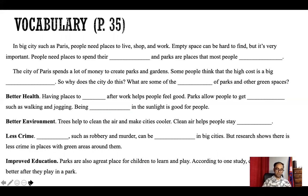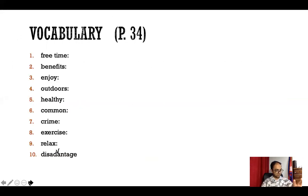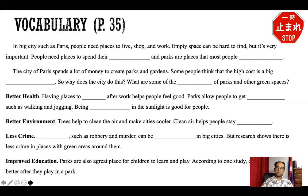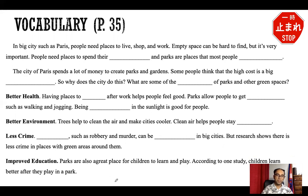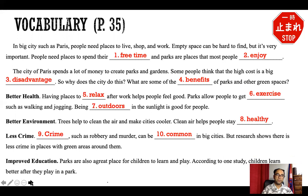Let's go to the next activity. You have to use the words given in exercise B to fill in the blanks. Stop the video here and take about three or four minutes to fill in the blanks with the correct word. When you finish, come back and see the answers. The answers are: number one — free time, two — enjoy, three — disadvantage, four — benefits, five — relax, six — exercise, seven — outdoors, eight — healthy, nine — crime, and number ten — common. I hope that was a really good practice for studying the vocabulary.